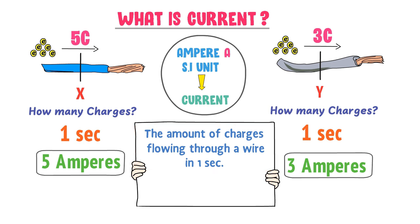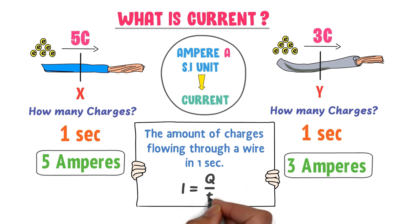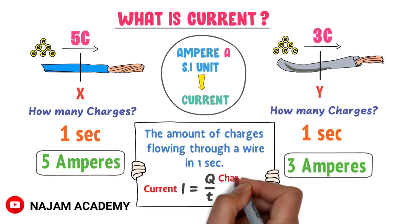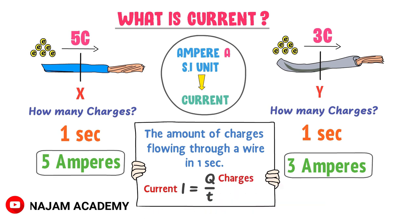The formula of current is I = Q / T, where I is the current, Q is the charge in coulombs, and T is the time in seconds.